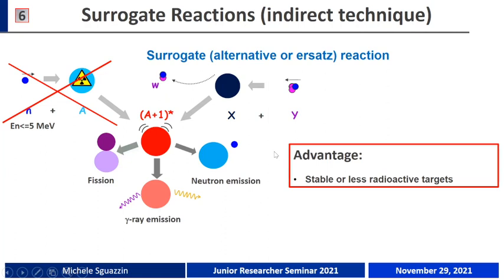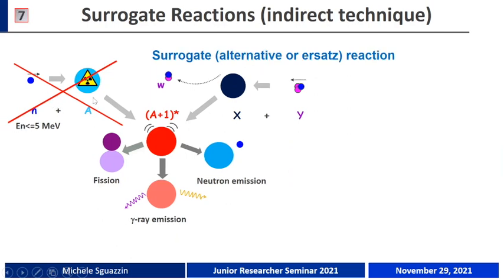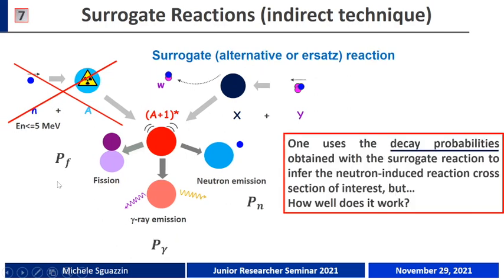One of the greatest advantages of surrogate reactions is that if we are not too far from the stability valley and an appropriate beam-target combination is available, we can use a target that is stable or less radioactive compared to the one required in the neutron-induced reaction. We then measure the decay probabilities of the compound nucleus using the surrogate reaction and use these probabilities to infer the neutron-induced reaction cross-section of interest.